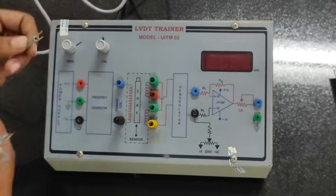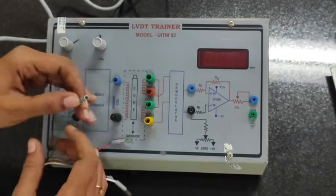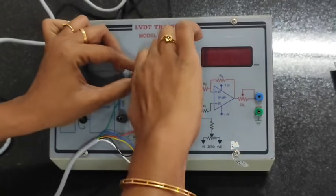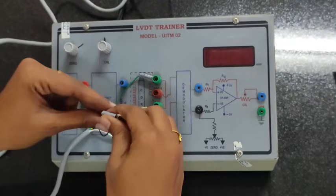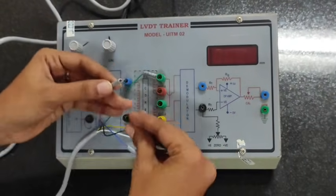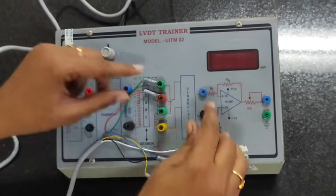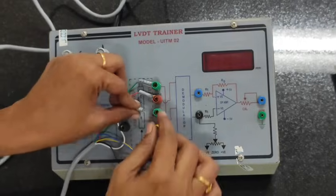There are color indications. Based on the color indications, we can give connections. First one is green, then next one is red. This is given to the secondary coil.